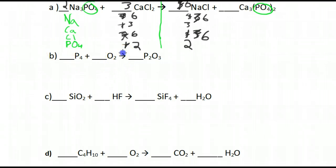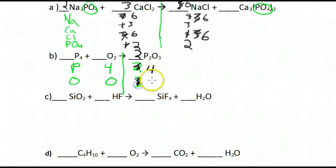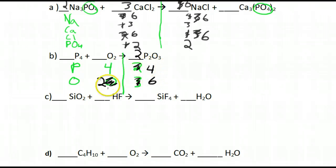Let's do the next one. We can make a chart again — you can also use scrap paper. We have P and O. It's pretty straightforward: four P's on this side, two on the other; two O's on this side and three O's on the other. Let's start by fixing the P — put a two here — and that gives us four P's and six O's.